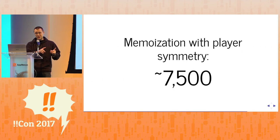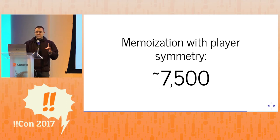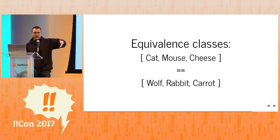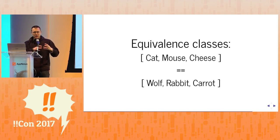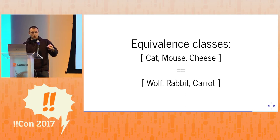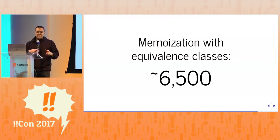We can actually do better by combining memoization with player symmetry. But the really cool thing is we can save a bit more by using equivalence classes. The three columns of the board are more or less the same, so instead of talking about cats and mice specifically, we talk about a predator, its prey, and its meta-prey in general terms. By canonicalizing the game state cleverly this way — taking into account everyone's cards and the board state — we knock off another thousand-ish states, getting down to just a few seconds of computation.